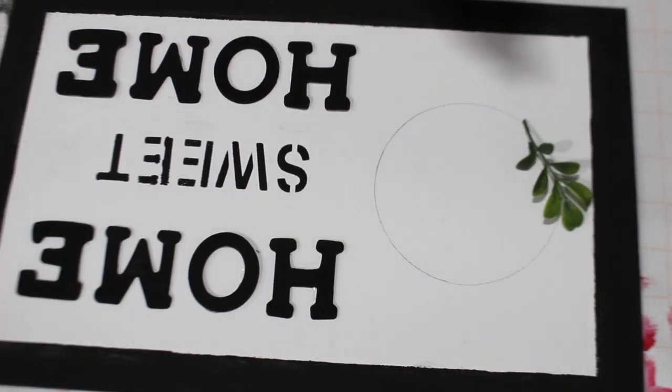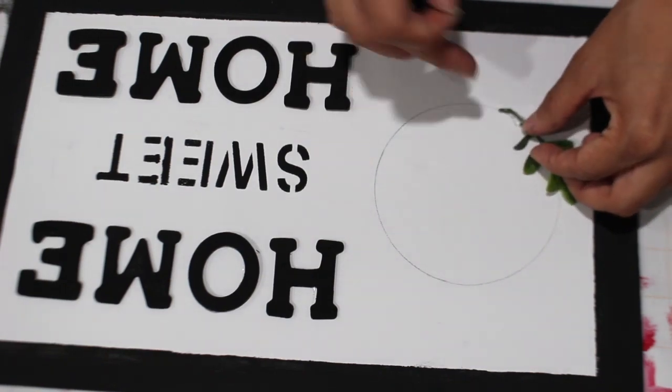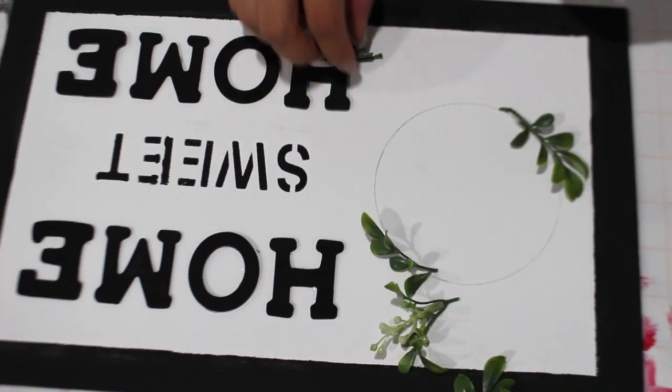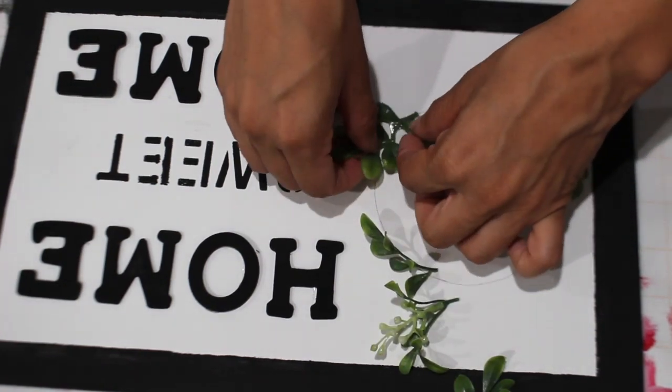To finish up this sign, I'm just going to be adding a small wreath. What I did was just take a lid and drew a circle out of it, and then just start gluing down this greenery that I had.